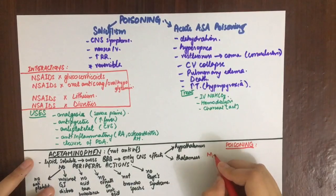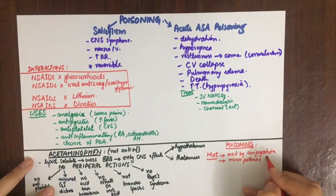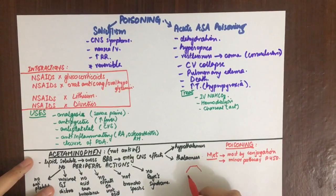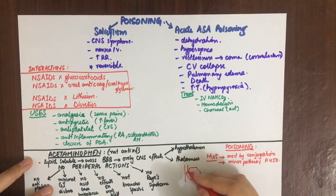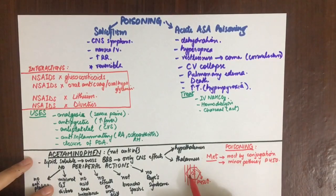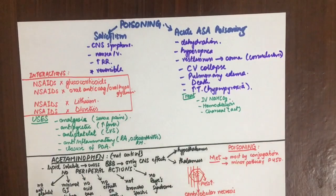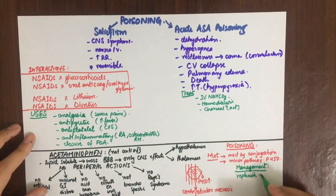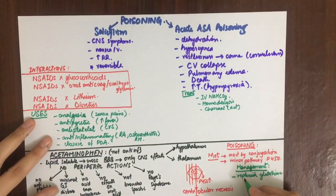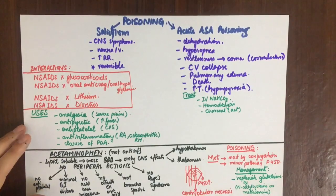To understand acetaminophen poisoning, we must understand its metabolism. It is mostly metabolized by glucuronyl transferase conjugation in the liver to form inactive conjugates. A minor pathway via cytochrome P450 forms toxic free radicals causing liver damage. Normally, glutathione in cells neutralizes these free radicals, but glutathione supply is limited. When depleted, liver damage occurs from the center of the hepatic lobule (where P450 is most concentrated), leading to centrilobular necrosis and fulminant hepatitis. Management involves replenishing glutathione with N-acetylcysteine or methionine (sulfhydryl group donors), plus general supportive toxicology management.